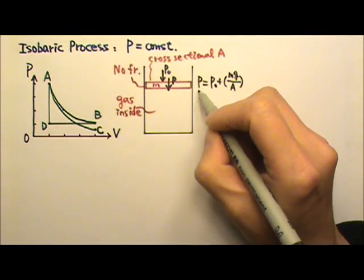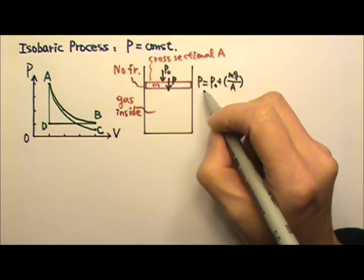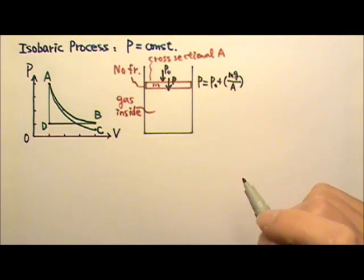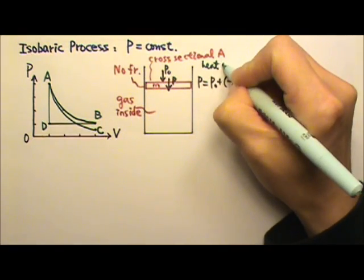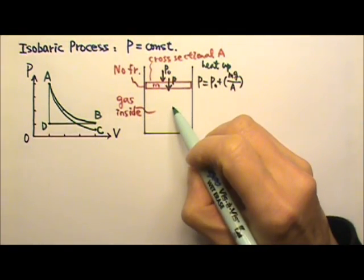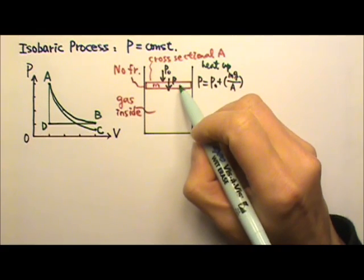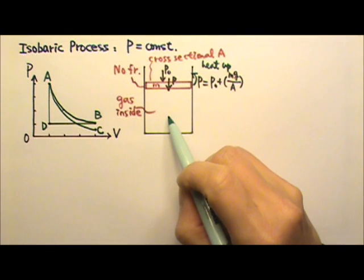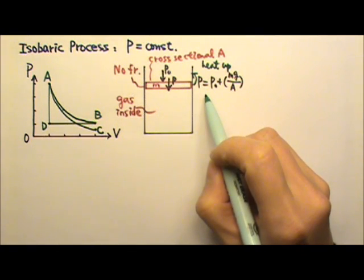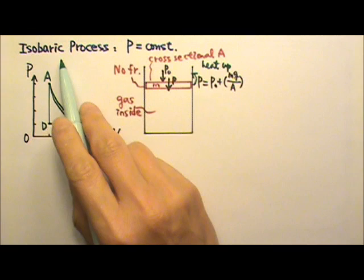So the pressure inside the container would equal to this pressure P₀ plus Mg over A. I can heat the gas up, and the gas would expand and push the piston up, while the pressure of the gas inside stays the same P. So this would be an isobaric process.